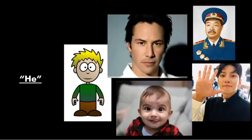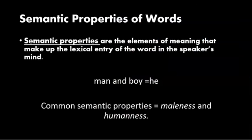One of the ways in which the meaning of a word can be analyzed is by determining its semantic properties. These properties are the elements of meaning that make up the mental image of the word in the mind of the speaker. For instance, the words 'man' and 'boy' can both be the referent for the pronoun 'he' because all of those words share the semantic properties of maleness and humanness.